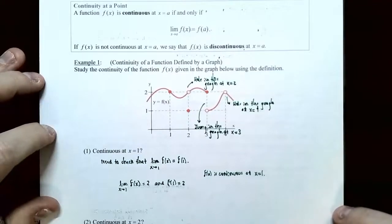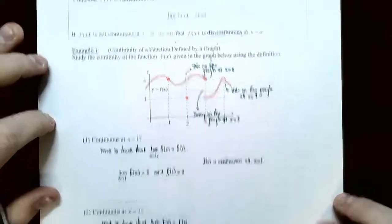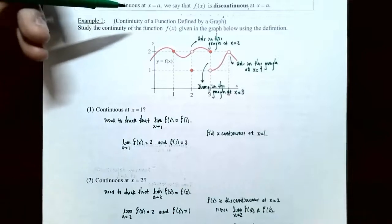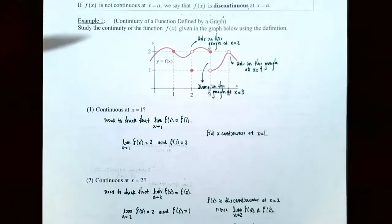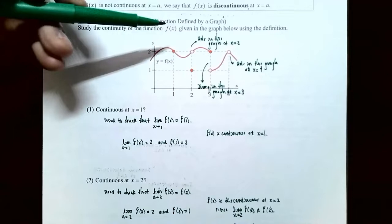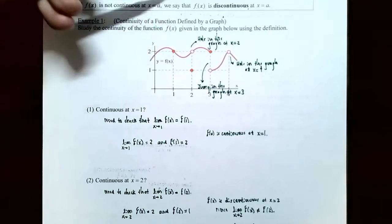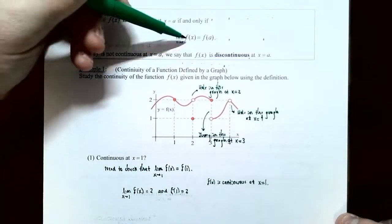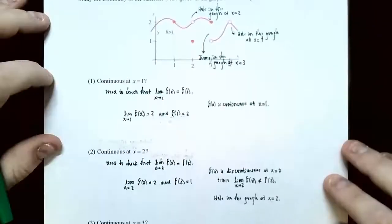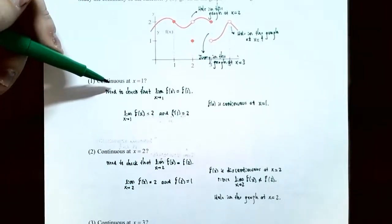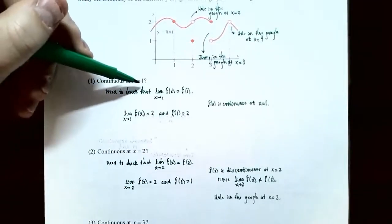Let's see why the definition is the way it is by looking at example one: continuity of a function defined by a graph. We'll study the continuity of f of x given in a graph using the definition: the limit as x approaches a of f of x equals f of a. Part one: is the function continuous at x equals one?